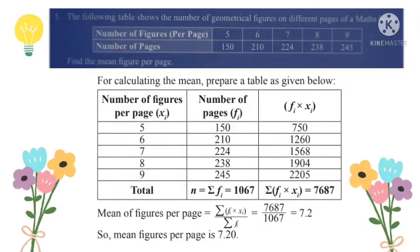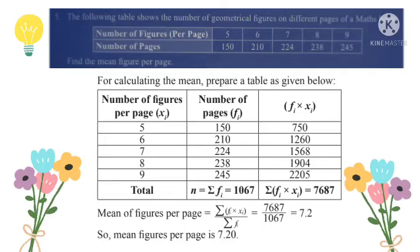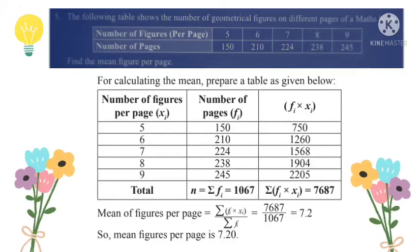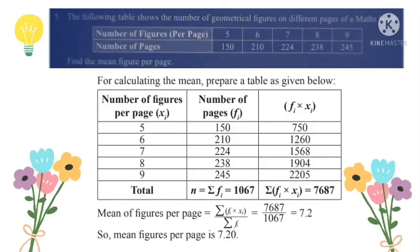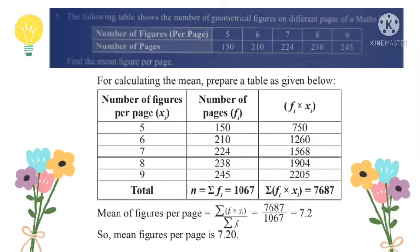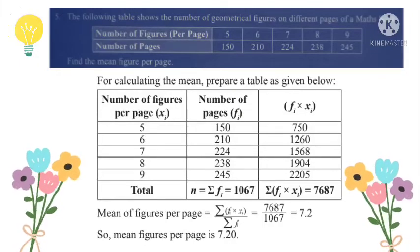We multiply: 5 times 150 equals 750, 6 times 210 equals 1260, 7 times 224 equals 1568, 8 times 238 equals 1904, and 9 times 245 equals 2205. Now we find the totals.